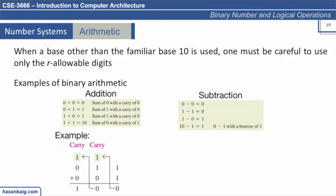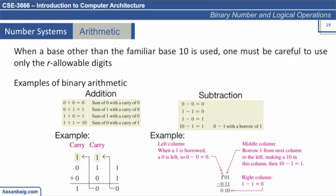For subtraction: zero minus zero is zero; one minus one is zero; one minus zero is one. We cannot subtract one from zero directly, so we need to borrow from the next digit. When you borrow, it makes that number two — so '10' represents two, and two minus one is one.